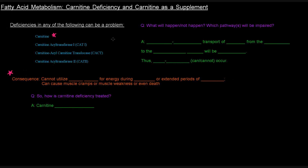Since we talked about carnitine in the previous video, I'd like to provide you with a little clinical correlate in this video. We mentioned the carnitine-mediated transport system of acyl-CoA's in the previous video, and why that was important specifically for the pathway of beta-oxidation.